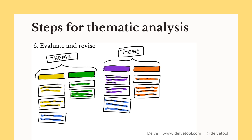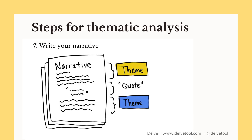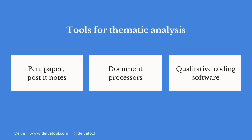Once you feel confident about your themes, you can move on to write your final narrative. Writing the narrative is the final step — to tell the story of your data. You should have fully thought-out themes, and now it's your chance to communicate to your readers about the validity of your analysis. Make sure your narrative tells a coherent story and choose vivid quotes to help back up your points. Your narrative should go beyond just describing your data and should include your own interpretive analysis, making an argument for the claims that you present.